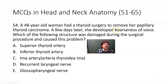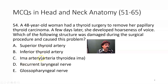A 48-year-old woman had thyroid surgery to remove her papillary thyroid carcinoma. A few days later she developed hoarseness of voice. Which structure was damaged during the surgical procedure? Certainly a nerve — not the glossopharyngeal nerve. It should be the recurrent laryngeal nerve. It innervates all the intrinsic muscles of the larynx except the cricothyroid, which is innervated by the external laryngeal nerve. That nerve may be damaged during surgery, specifically in papillary thyroid carcinoma if it is very large, resulting in hoarseness of voice because the intrinsic muscles of the larynx are paralyzed.